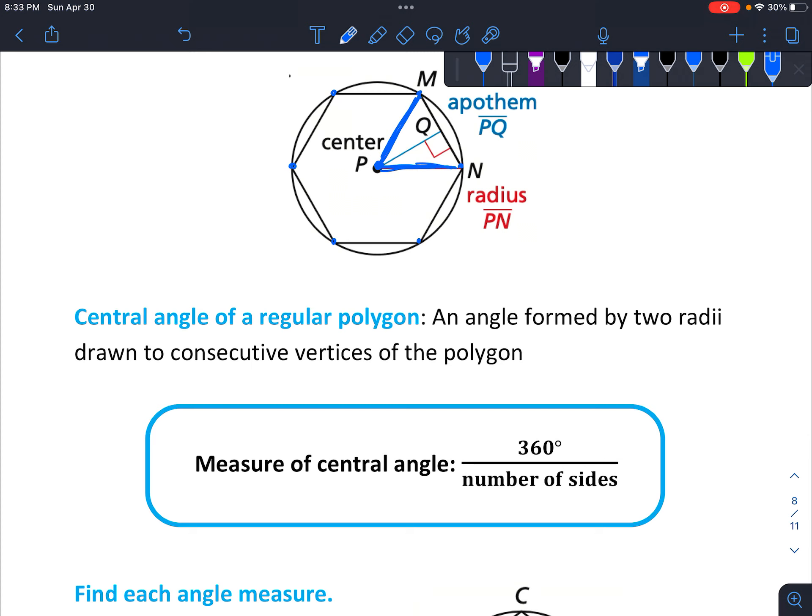Which makes sense when you look at it, because imagine each of these sides would have one of those triangles. And the whole thing around, the whole circle is 360 degrees. So you simply divide by the number of sides.